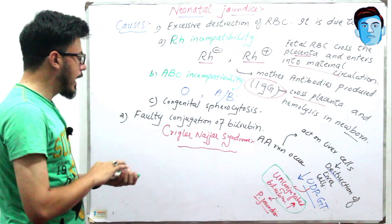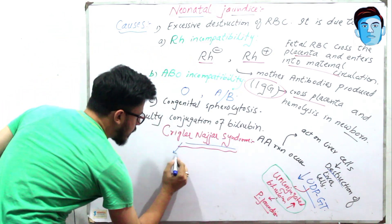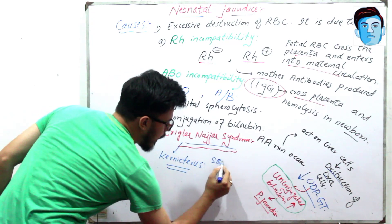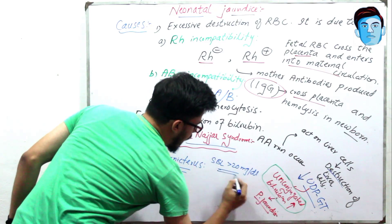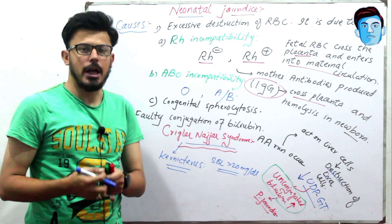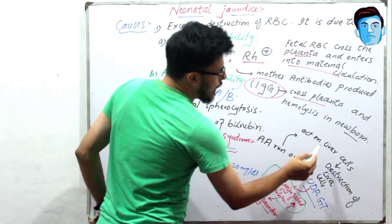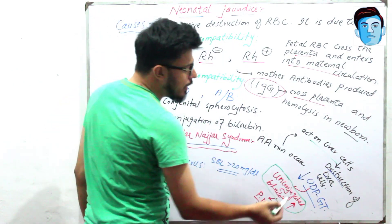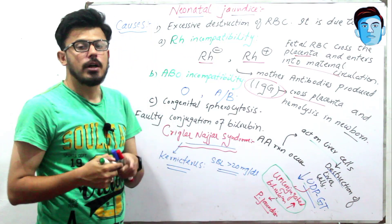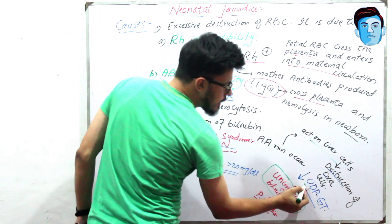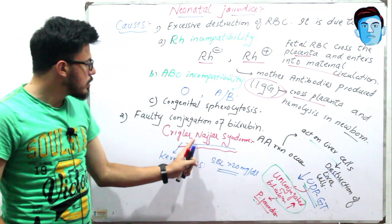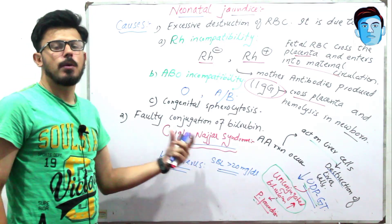An important complication associated with Crigler-Najjar syndrome is Kernicterus, which occurs when the serum bilirubin level is more than 20 mg per dL. The antigen-antibody reaction acts on hepatocytes, causing destruction and decreased UDP-GT level. The treatment option for Crigler-Najjar syndrome is oral phenobarbitone.